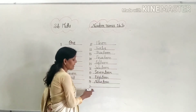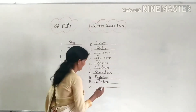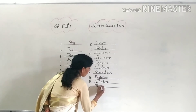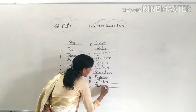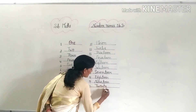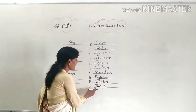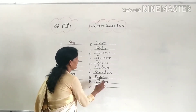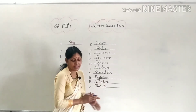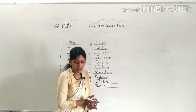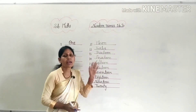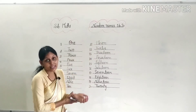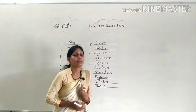And last, twenty: T-W-E-N-T-Y. Spelling of twenty: T-W-E-N-T-Y. So, what did we study just now? Spelling. We studied the spellings from one to twenty.